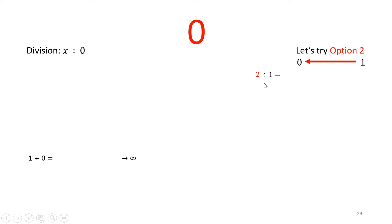So 2 divided by 1 is 2. 2 divided by 0.1 is 20. 2 divided by 0.01 is 200. 2 divided by 0.001 is 2000. And 2 divided by 10 to the power minus 9 is 2 billion. Just a second. That means 2 divided by 0 also approaches infinity.